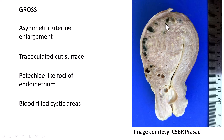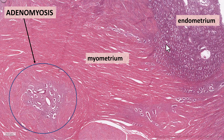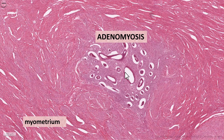This is the classical appearance on gross examination. Microscopically, you can see that there is endometrium on one end, intervening myometrium is normal, and within the myometrium you find foci of endometrium — meaning endometrial glands and stroma in the myometrium. At higher magnification, you can confirm endometrial glands and stroma within the myometrial tissue — that is adenomyosis.